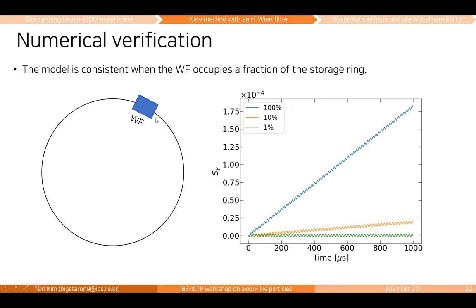We also did numerical verification when the Wien filter occupies only a fraction of the storage ring, since the analytical calculations assumed the Wien filter occupies the full ring. The spin tracking simulation was done with this realistic condition. When the Wien filter occupies 100% it gives full signal (blue), at 10% occupancy (orange) the signal is about one tenth, and at 1% there is another factor of ten reduction — consistent with the expectation that the signal scales with the Wien filter occupancy fraction.